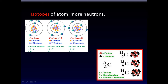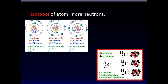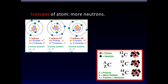Carbon has six protons but can have a variable number of neutrons. Most commonly it has six neutrons, but it may have seven or eight neutrons. So there are three types of carbon: carbon with six neutrons (carbon-12), carbon with seven neutrons (carbon-13), and carbon with eight neutrons (carbon-14).